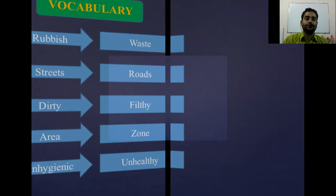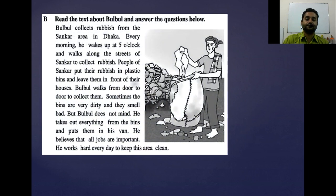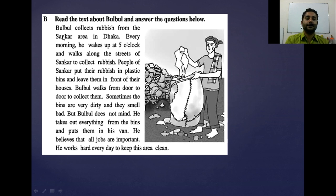Now move to our passage. In our first page, we will find this picture. There is a man who is standing there and he is collecting some kind of rubbish and putting them into his deck. Read out the passage: 'Bulbul collects rubbish from the Shankar area in Dhaka.' So I have shown you the meaning of rubbish — Bulbul collects waste from the Shankar zone in Dhaka.